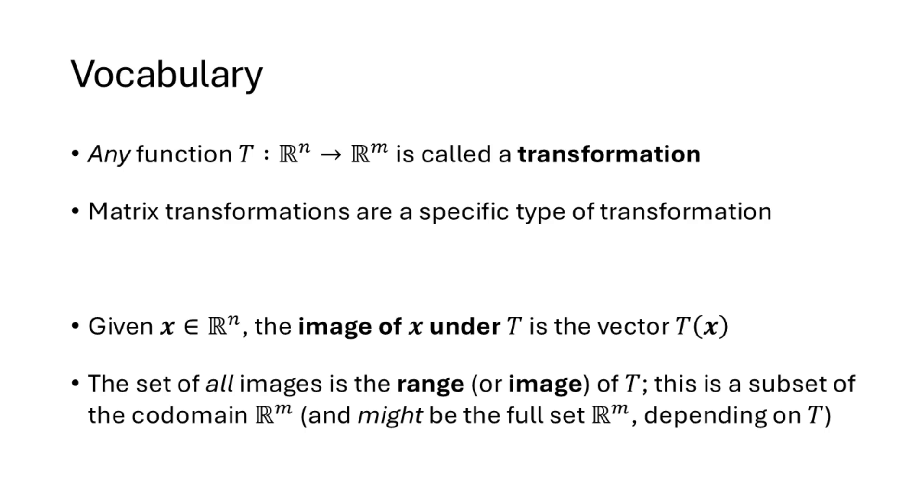If we have a vector in our domain, we say that the image of that vector under t, the image of that vector under our transformation, that's just a fancy name for t of x. And if we take all of the images, all of the actual outputs that we get from plugging vectors into this function, we collect those together into one big set. That set is called the range, or confusingly, the image of t. So this is a subset of the codomain. Now depending on the transformation t, it's possible that that range is everything. It's possible that when we plug vectors into our transformation t, we get all vectors in Rm. And we'll analyze this possibility in a future lecture.